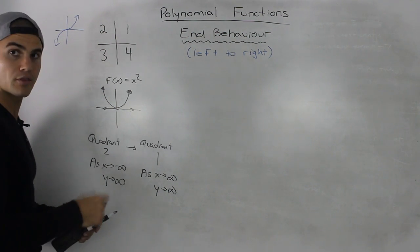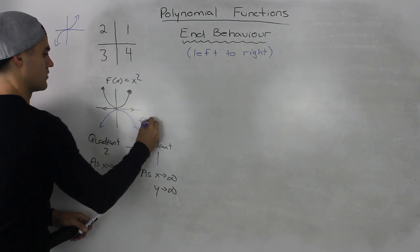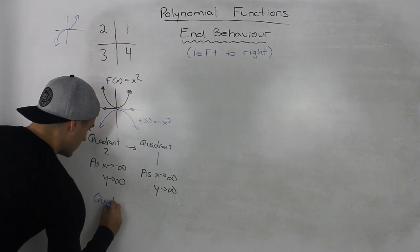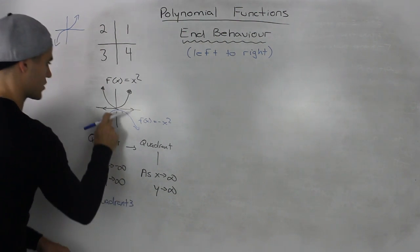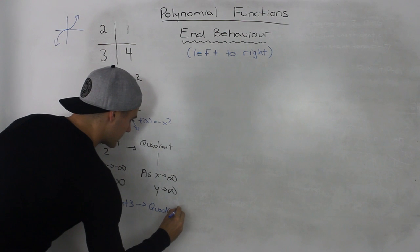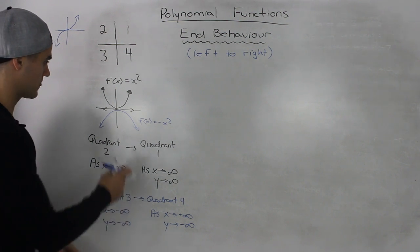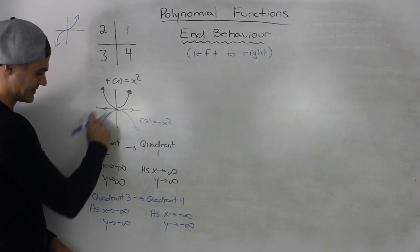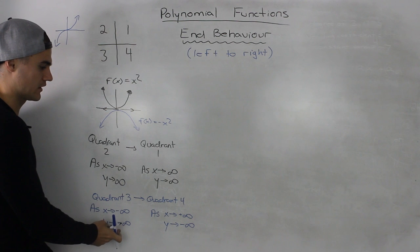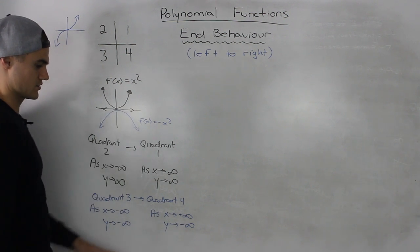Now, what if we took the other example? Let's say we had f(x) = negative x squared. We would have quadrant 3, so it would start in quadrant 3 and then end in quadrant 4. Another way to write the end behavior from quadrant 3 to quadrant 4: starting in quadrant 3 means that as x goes to negative infinity, the y values are also going to negative infinity. And then ending in quadrant 4, as x is going to positive infinity, y is going to negative infinity.